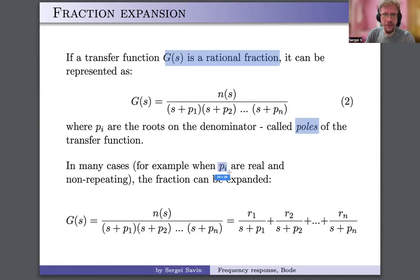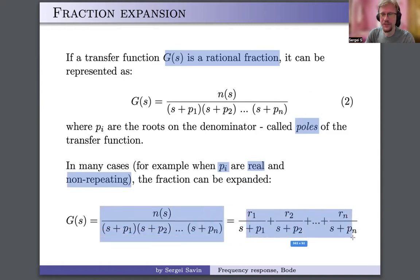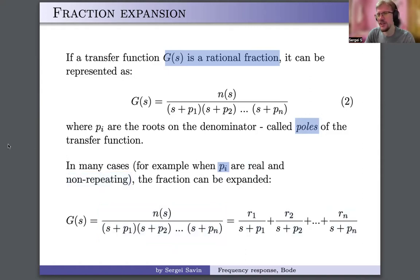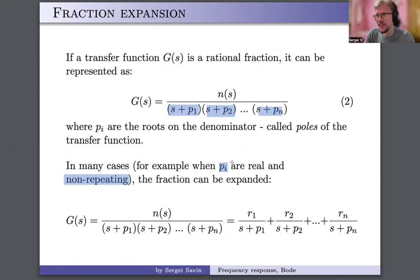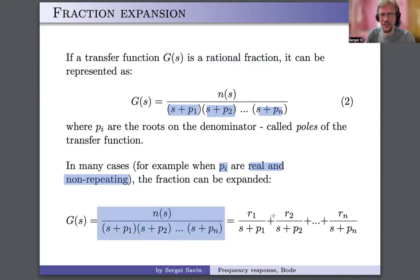If the poles pᵢ are real and non-repeating, we can decompose G(s) into a sum of simple fractions. The poles behave exactly the same as eigenvalues — in fact they are the same. When I say the poles are real and non-repeating, I am making the same assumptions made when proving stability properties earlier, so the assumptions are consistent across the two approaches.